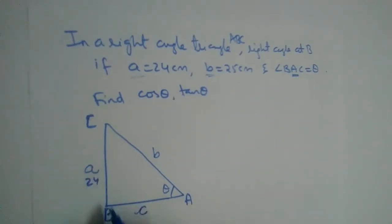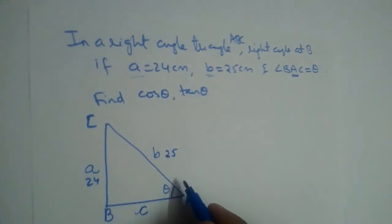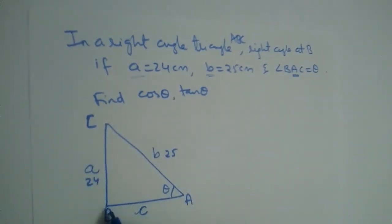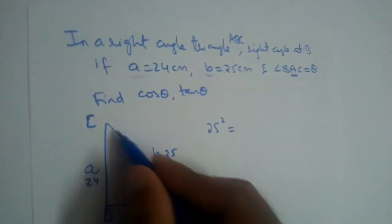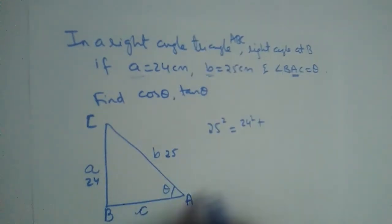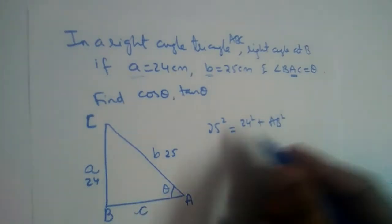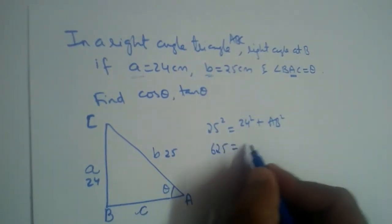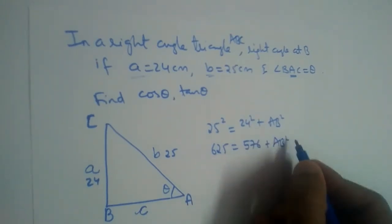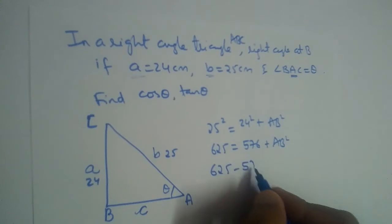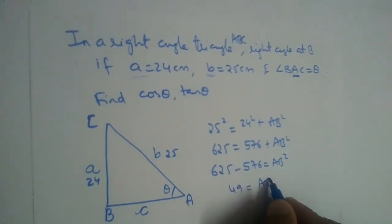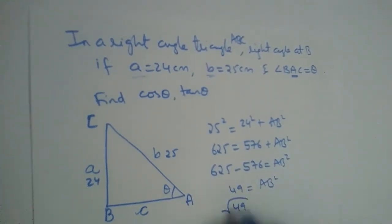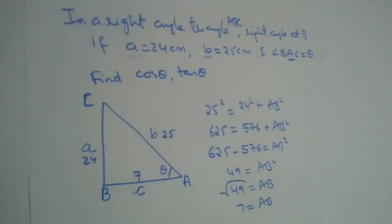Small a is 24, so the side opposite A (which is BC) is 24. Small b is 25, so the side opposite B (which is AC, the hypotenuse) is 25. Applying the Pythagorean theorem: 25² = 24² + AB², so 625 = 576 + AB², giving AB² = 49, and therefore AB = 7.